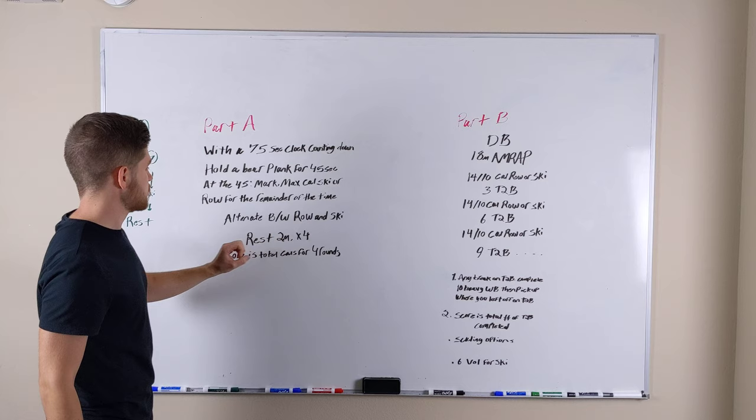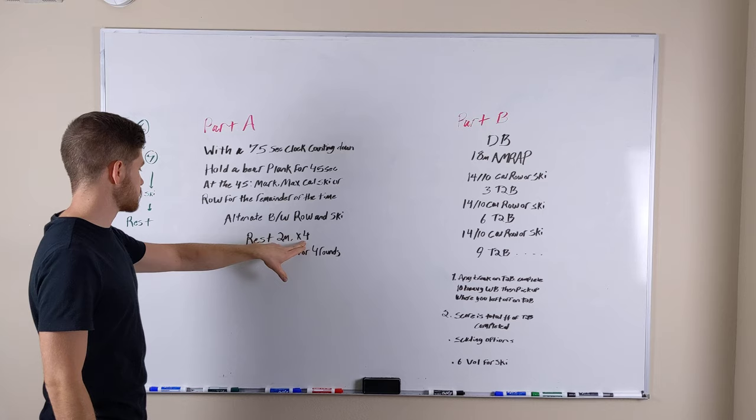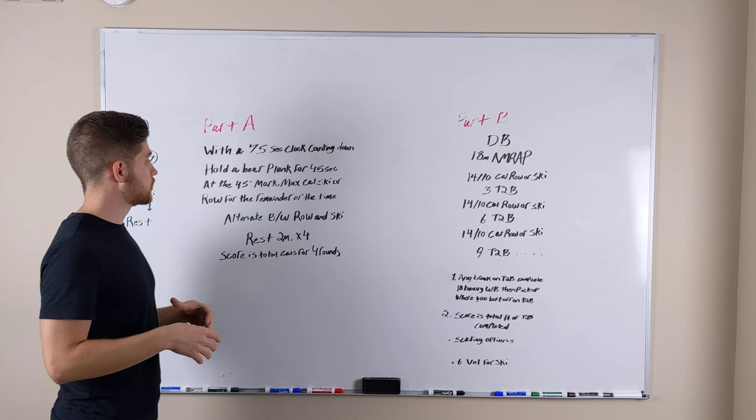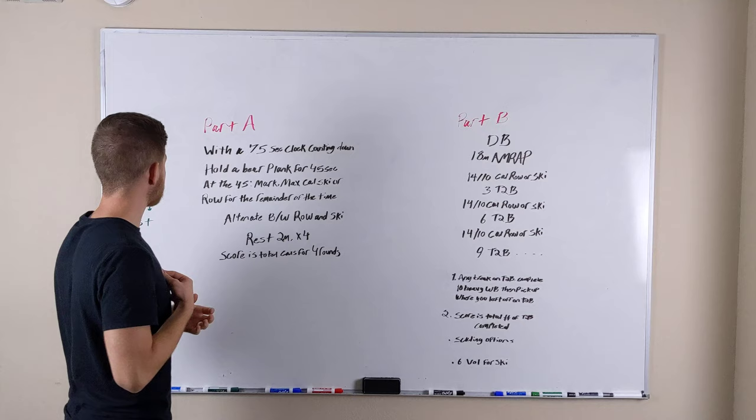We're going to do that for four rounds total. Score is total calories for four rounds. Whenever you get off the ski or the row, make sure that you are writing down your calories so you can add it later in the computer.